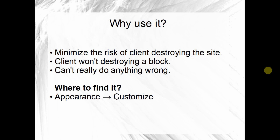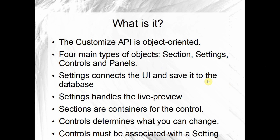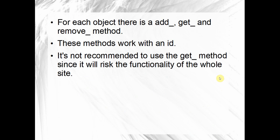The Customizer API is object-oriented and has four main types of objects: sections, settings, controls, and panels. Settings connect the UI and save to the database, and also handle the live preview. Sections are containers for controls, and controls determine what you can change. Controls must always be associated with a setting.